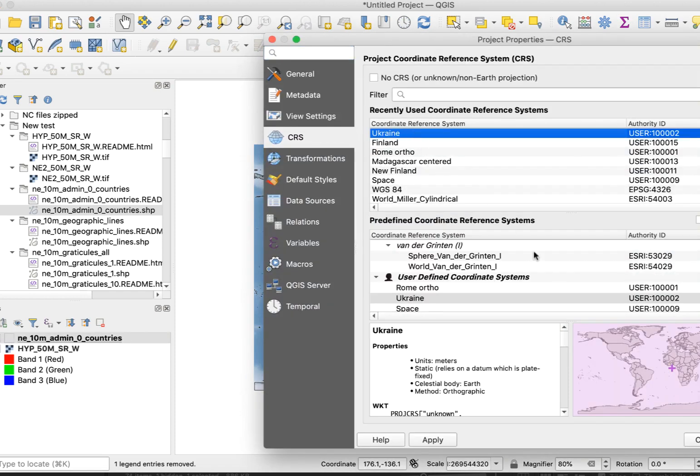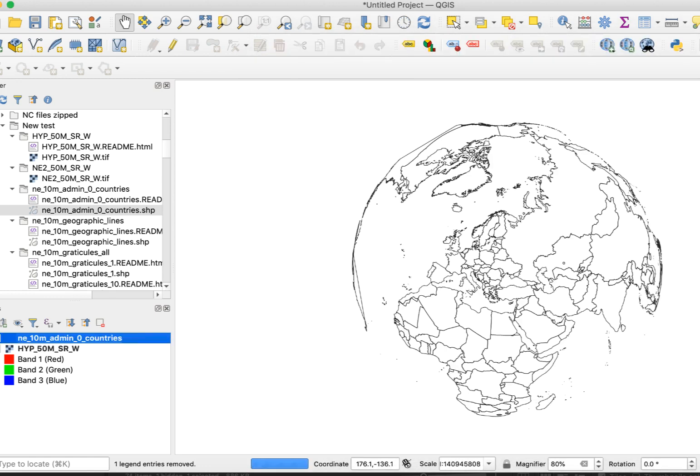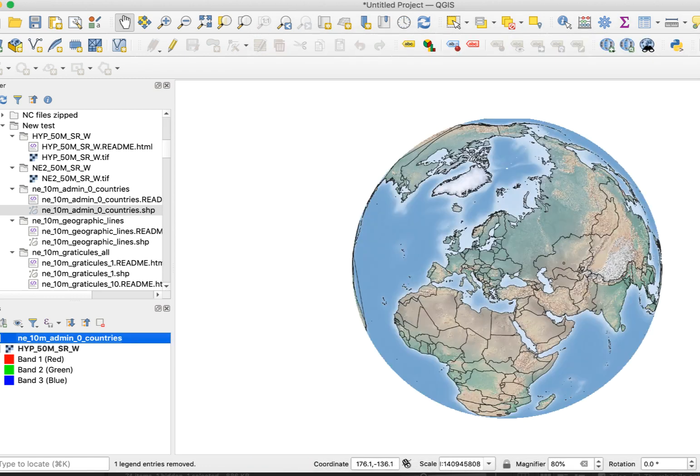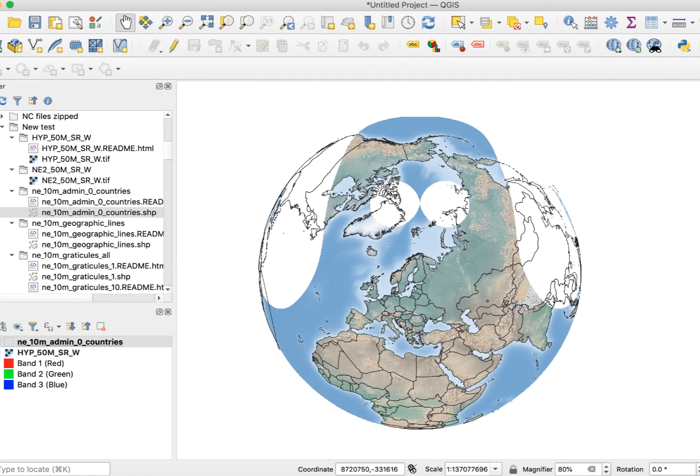Sometimes for reasons I don't really understand, some ortho projections produce weird results with these files. Here's what my Finland projection looks like. Unless you know what's causing this problem and how to solve it, just be aware of this issue.